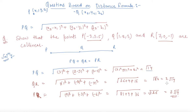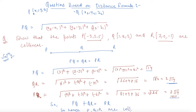As you can see directly, PQ plus QR equals root 14 plus 2 root 14, which equals 3 root 14, and that equals PR. Hence P, Q, R are collinear. This is what we needed to prove. I hope that is clear to you. Now let's move to another question.